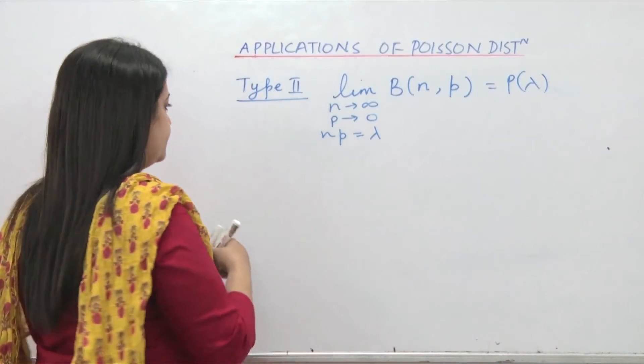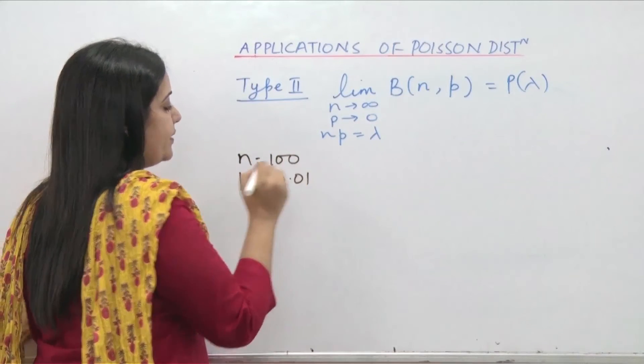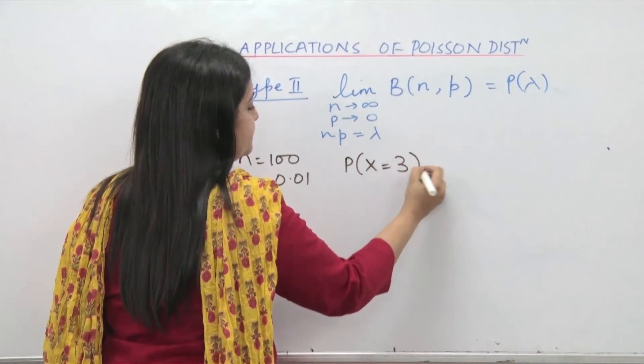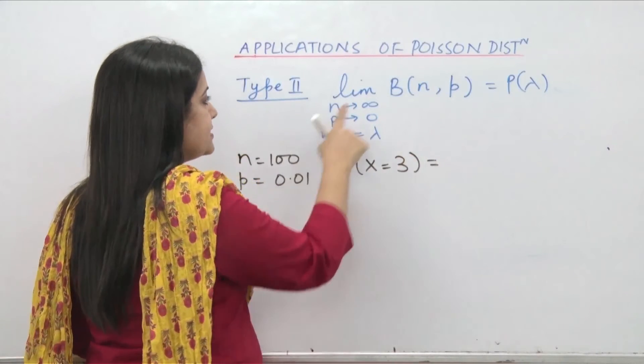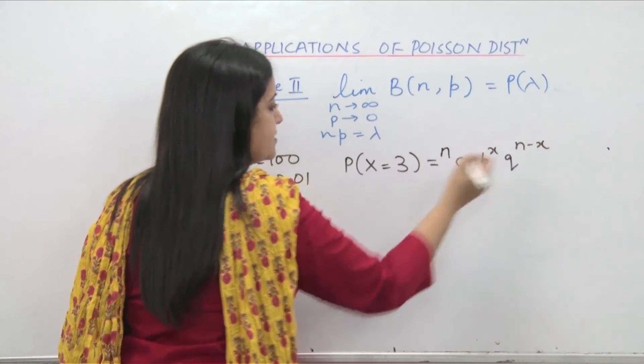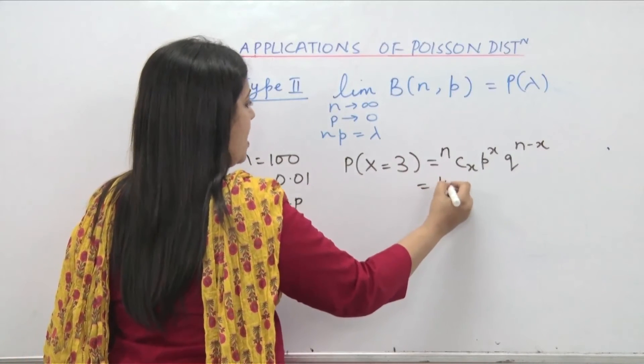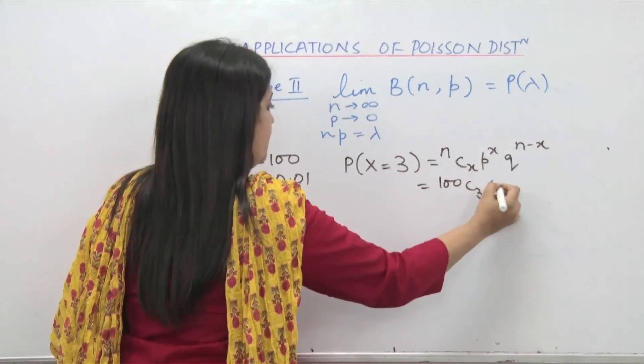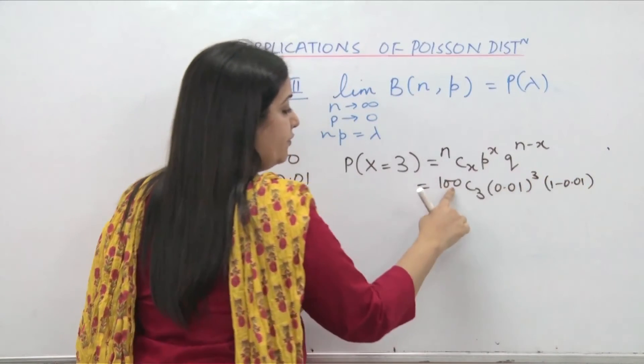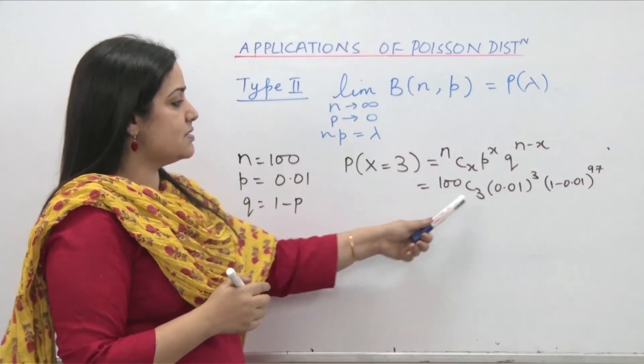Let us look at an example. Suppose n is 100 and p is 0.01 and you are to calculate probability x equal to 3. Now we know fxx of binomial is nCx p to the power x q to the power n minus x where q stands for 1 minus p. So this becomes 100C3 0.01 to the power of 3 and 1 minus 0.01 to the power of 100 minus 3 which is 97. As you can see this is pretty complicated.